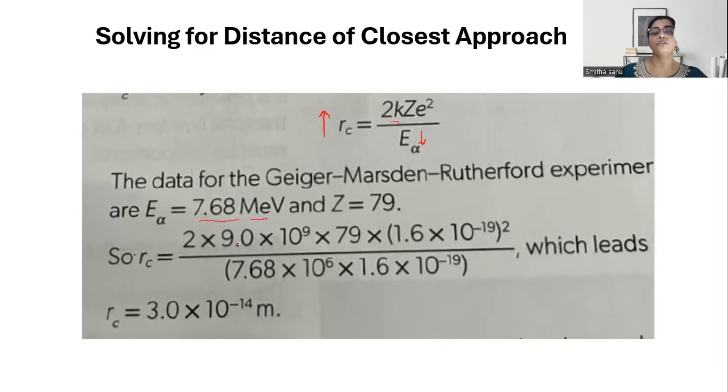Substituting all the values, you get the radius of the nucleus. This is the radius of the gold atom, which is 3 times 10 to the power minus 14 meters.